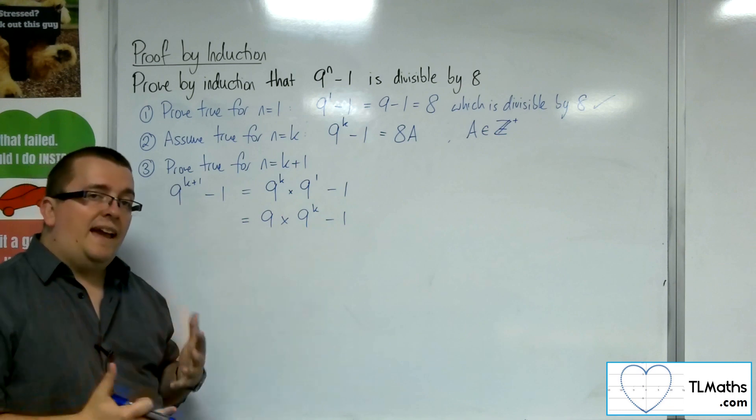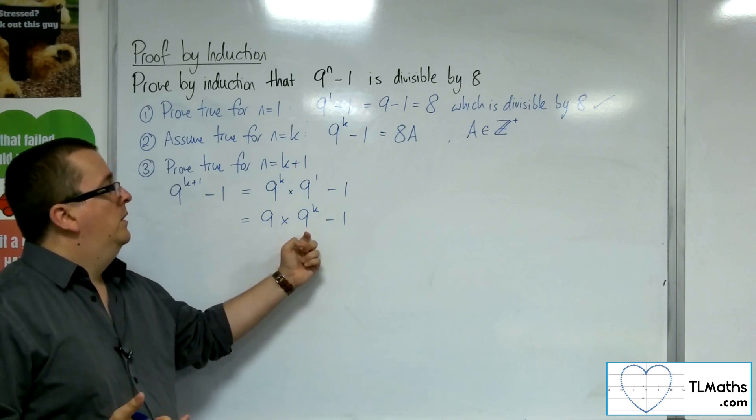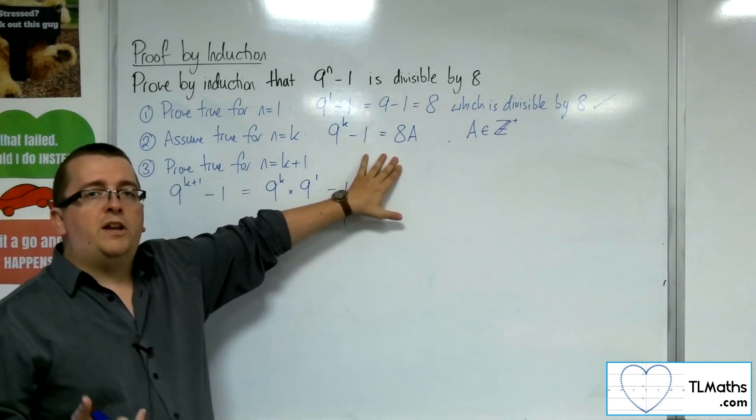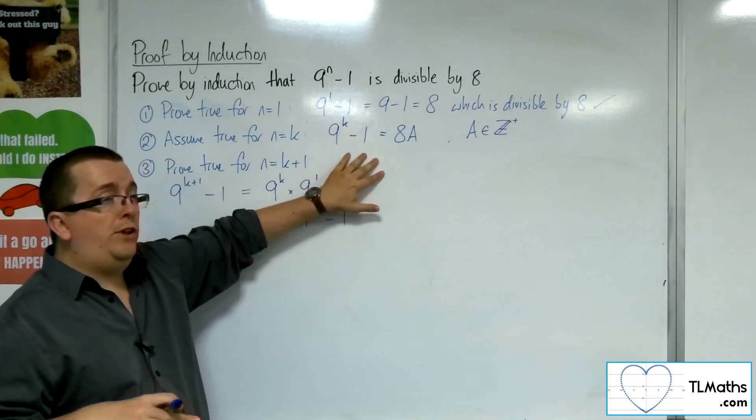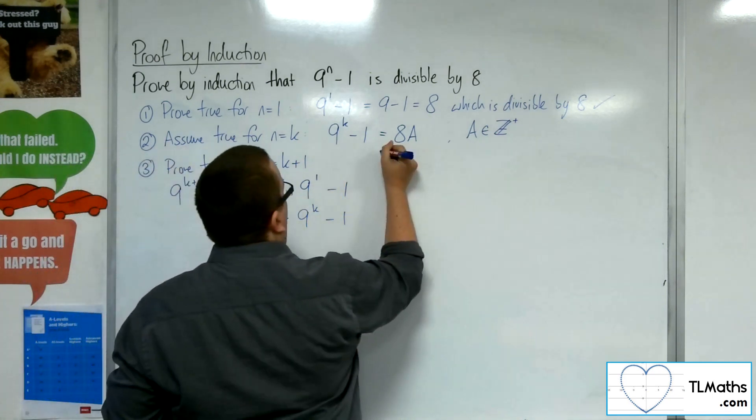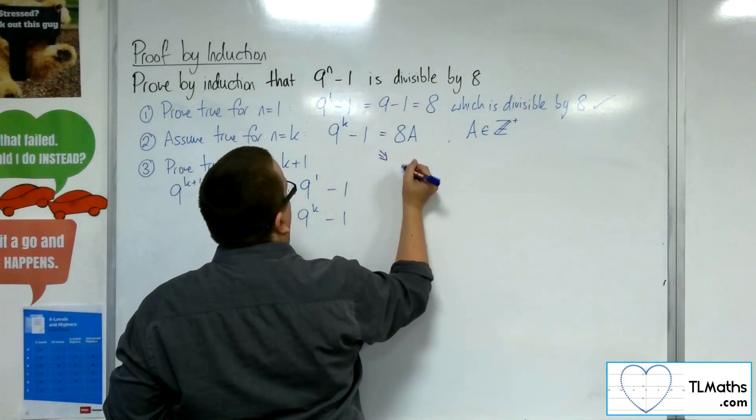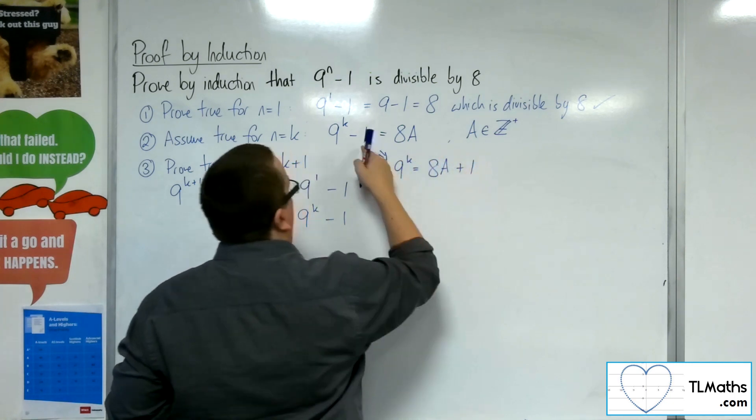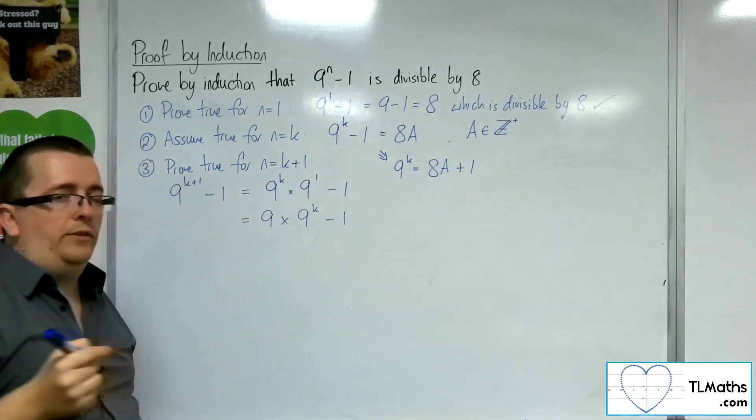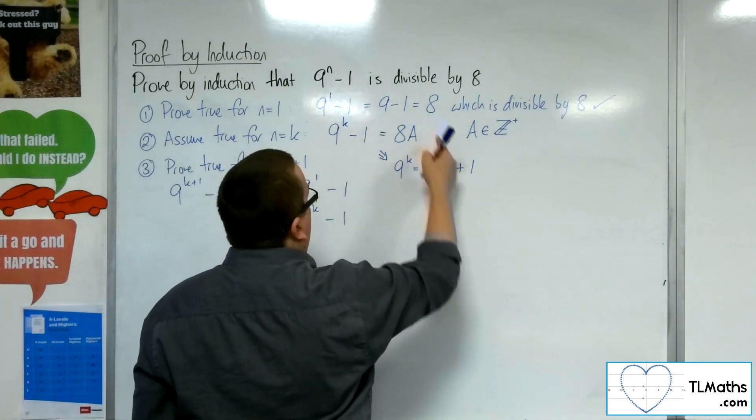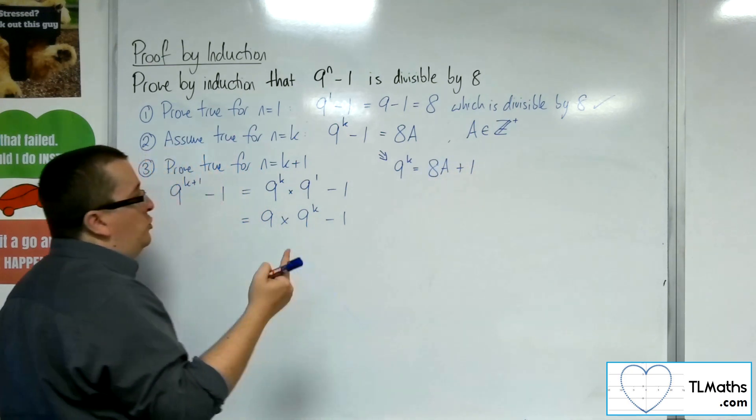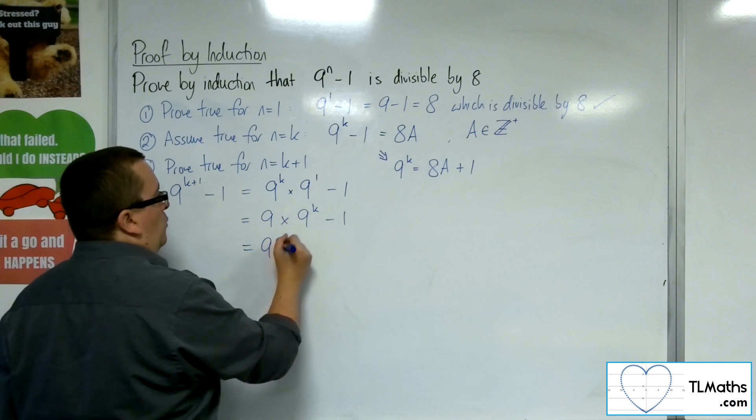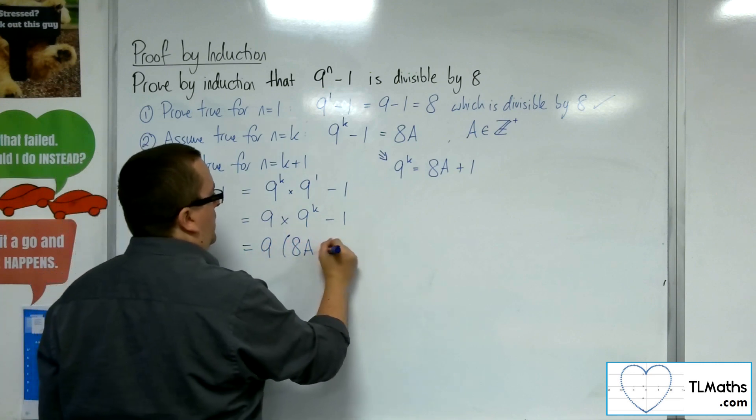Now, the 9 to the k part that I've got here, I can get an expression for that by going back to my assumed statement. So from that, I can say that 9 to the k is equal to 8a plus 1. So just adding the 1 to both sides. Now, because I've assumed that that's true, then this statement is also true. So I can replace the 9 to the power of k with 8a plus 1.